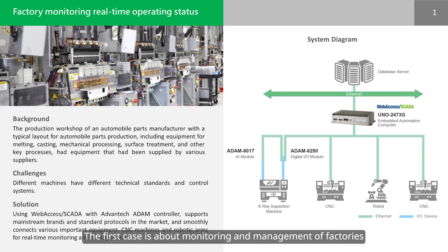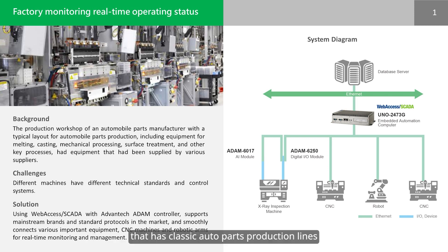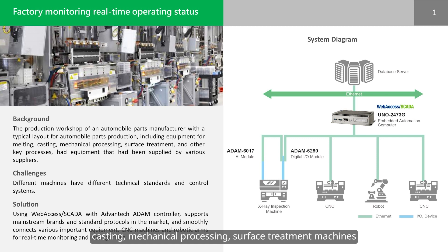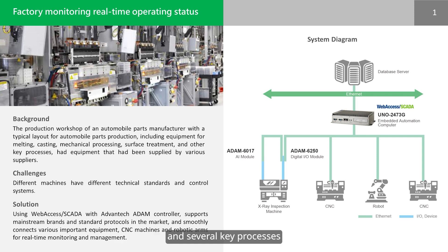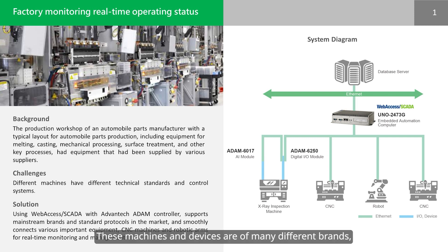The first case is about monitoring and management of factories. This case describes the production workshop of an auto-part factory that has classic auto-part production lines, including smelting, casting, mechanical processing, and surface treatment machines, and several key processes. These machines and devices are of many different brands, all with different technical standards and control systems.